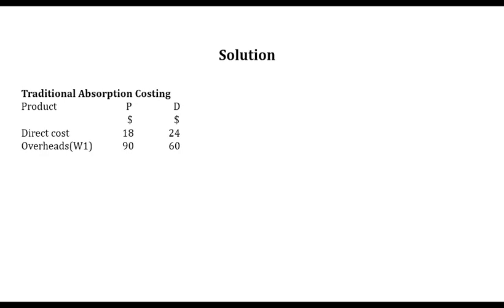After having the overhead costs per unit, we obtain the total cost of each product. Total unit cost: for P it is $18 plus $90 equals $108; for D it is $24 plus $60 equals $84. We are done with the traditional absorption costing system.